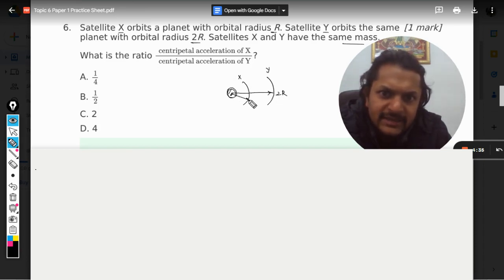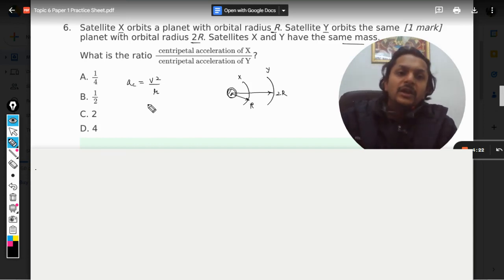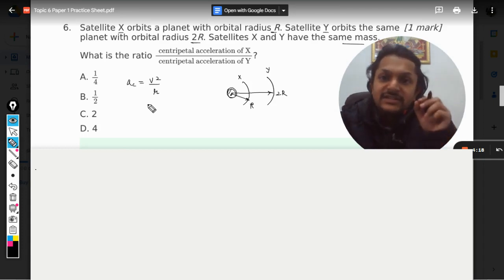Now they want you to find the centripetal acceleration of X. What is the formula for centripetal acceleration? This we know, it is given by v squared by r. Now radius is known to us, but the velocity with which these satellites are moving is not known, so we have to find the velocity.